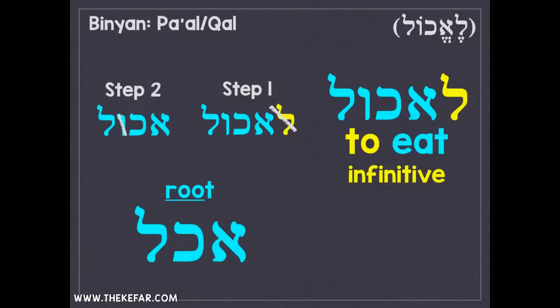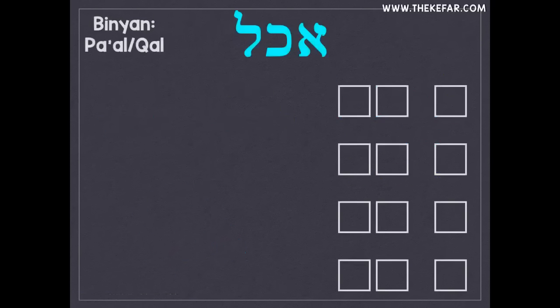We get the vowel pattern from the Binyan. This is a Pa'al verb — you hear that a-a vowel pattern — so the root also adopts that pattern: achal, just like the Binyan Pa'al. Now we're going to use our root to conjugate this verb in the present tense. The present tense in Hebrew has four forms: masculine singular, feminine singular, masculine plural, and feminine plural.